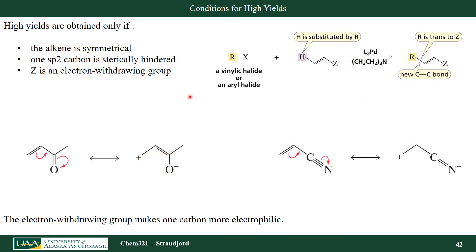For high yields in the Heck reaction, the alkene should be symmetrical — meaning I could attack either carbon and remove either hydrogen, giving the same two products. One of the sp2 carbons should be sterically hindered, meaning I have a large Z group there or two large Z groups. Also, the Z group should be an electron-withdrawing group. Why electron-withdrawing? If I consider resonance, I can move electrons over to the oxygen, or if I have a cyano group I can move electrons away — making one carbon more positive and providing greater selectivity between the two different carbons.